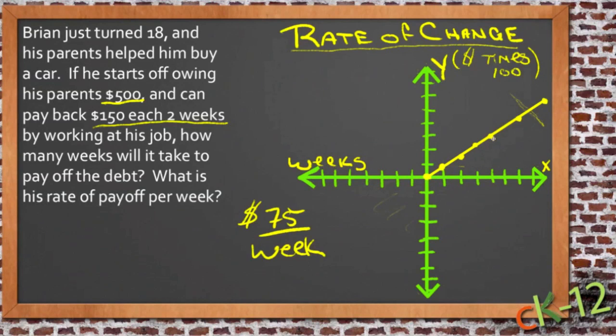And we can see the rate of change visually on the graph by looking at how fast that line goes up. If he were to pay it off more quickly, if he were to pay off say $150 per week, then that line would change to look more like this. If he was paying off $150 every week instead of $150 every two weeks, then that line would be much steeper, like so. And we could see that that rate of change would have increased.